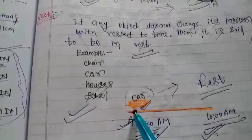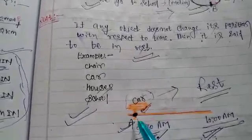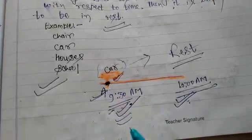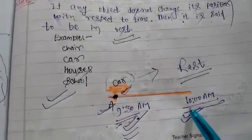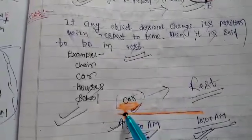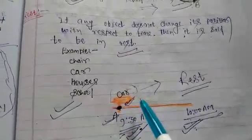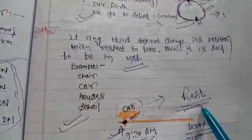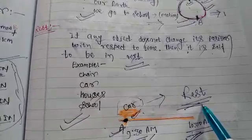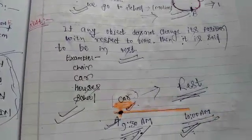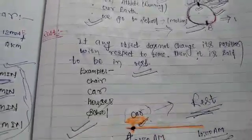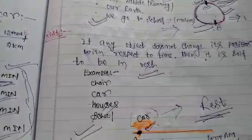To understand rest: suppose a car at 9:30 a.m. is at position A. After half an hour at 10 a.m., the car remains at the same position A. So the car is not changing its position, so the car is in rest. Similarly, a chair or car that does not change its position is also in rest. Our house always remains in rest.